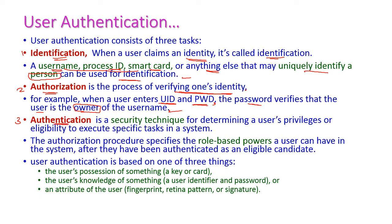The third task is authentication. Authentication is the security technique for determining the user's privilege or eligibility to execute specific tasks in the system. The particular user is accessing only the allocated resources or not — that is called authentication. The authorization procedure specifies the role-based powers a user can have in the system.